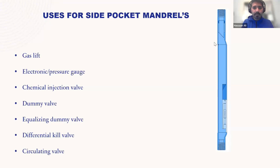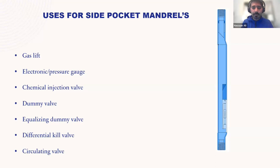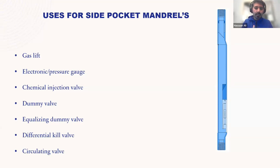Side pocket mandrels can be used not only for gas lifting but for various other procedures. You can install electronic pressure gauges to measure downhole temperature and bottom hole pressure, or chemical injection valves to inject chemicals — such as scale inhibitors or corrosion inhibitors — to the deepest point in the completion. You can also install a dummy valve, which is just a plug that stops gas lifting and blocks communication between casing and tubing, or a dump kill valve to kill the well for any workover operation.